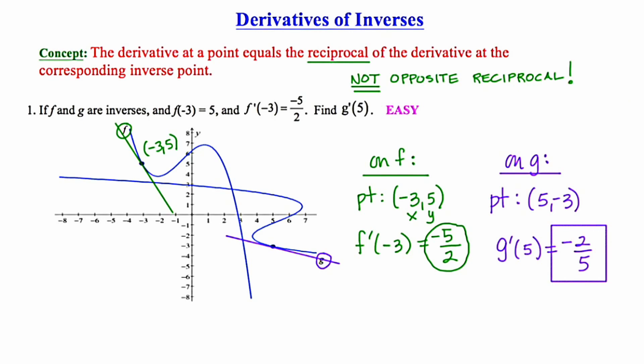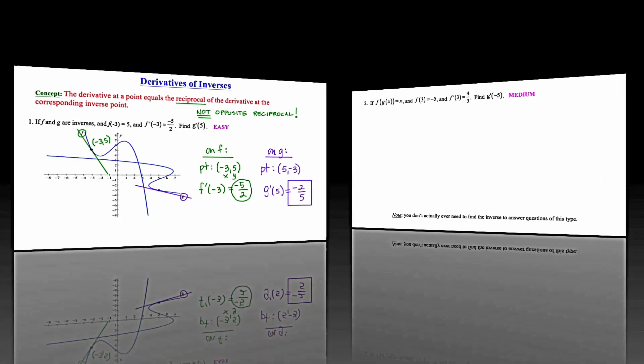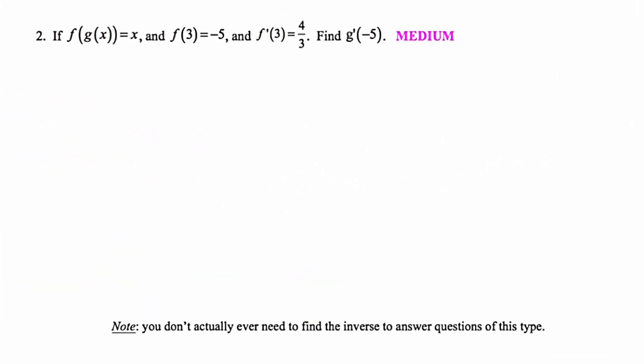Let's go on to a second example. In problem number 2, we're told that f of g of x equals x, that f of 3 is equal to negative 5, and that the derivative of f at 3 is equal to 4 thirds, and we're supposed to find the derivative of g at negative 5. The first thing to note is that f of g of x equals x is another way of stating that two functions are inverses, showing that their compositions equal x.